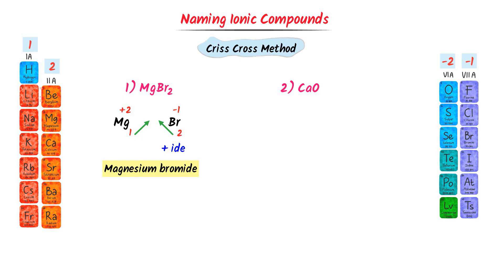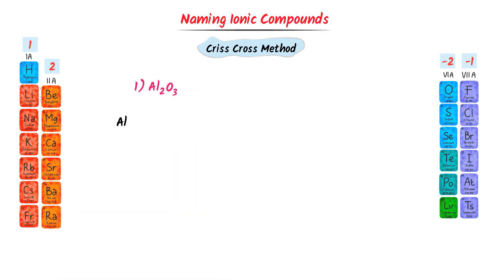For calcium oxide: the subscripts are 2 and 2, so they cancel. Calcium is in the second group carrying +2 charge, and oxygen is in the sixth group carrying −2 charge. Ca stands for calcium and O stands for oxygen with -IDE added — giving calcium oxide. For aluminium oxide: according to the criss-cross method, the subscript 2 belongs to oxygen and the subscript 3 belongs to aluminium, giving aluminium oxide.